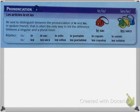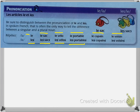The last thing in lesson 10 is the pronunciation — les articles le et les. Be sure to distinguish between the pronunciation of le and les. In spoken French, that is often the only way to tell the difference between a singular and a plural noun. S'il vous plaît, répétez: le sac, le vélo, le portable, le copain, le voisin.